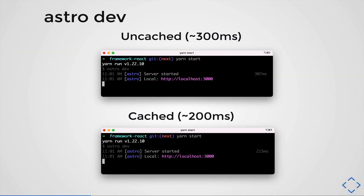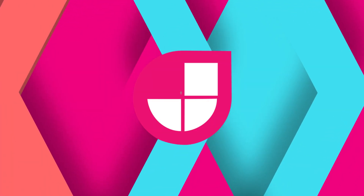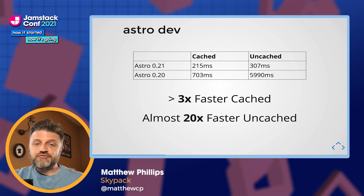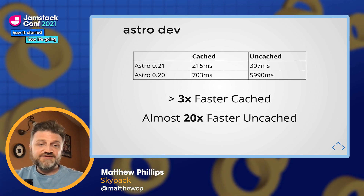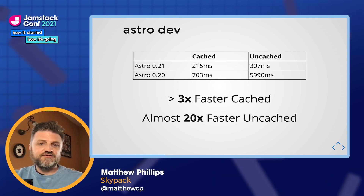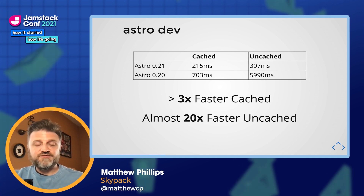The startup speed of running Astro Dev is much faster in Astro 0.21. At the top we have what happens when you run Astro Dev on an uncached site, and the bottom is cached. The first time — for example when you git clone your repository — it has to compile dependencies, but 300 milliseconds is extremely fast. Comparing to 0.20: in the cached version it was 703ms, now it's 215ms. In the uncached version, it was almost six seconds before; now it's only 307 milliseconds. That's three times faster cached and almost 20 times faster uncached.